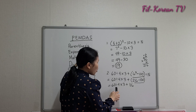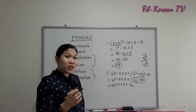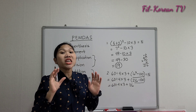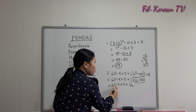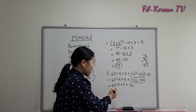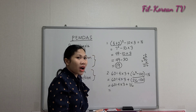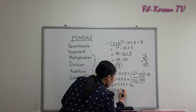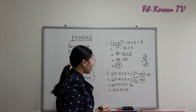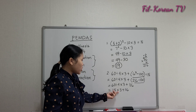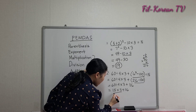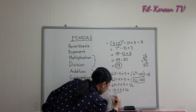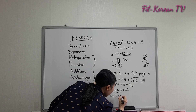Now there are three operations left. Division comes first before multiplication, and since division and multiplication rank equally, we do the operation from left to right. Division comes first, so we divide first: 60 divided by 4 equals 15. Then 15 times 3, and the operations left are multiplication and addition. We do multiplication first: 15 times 3 equals 45, plus 116.